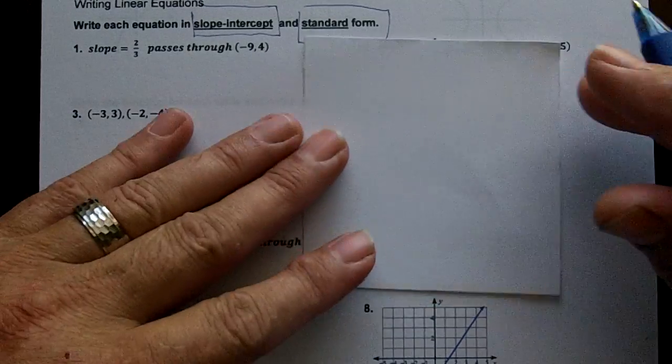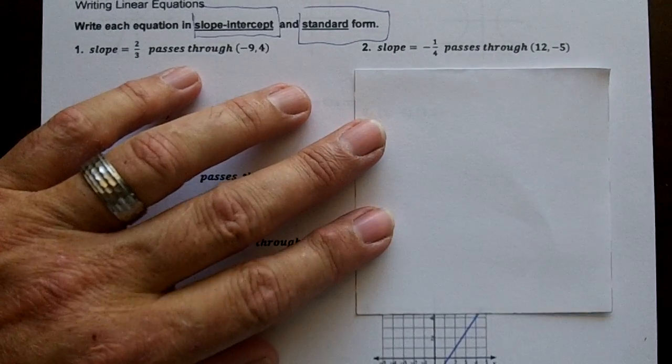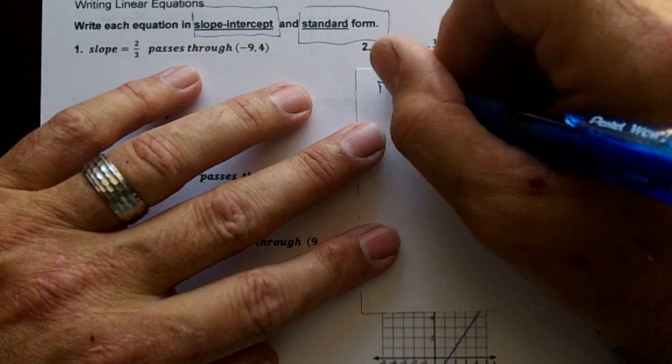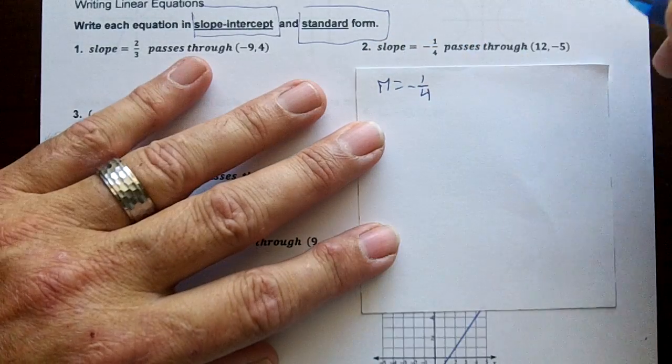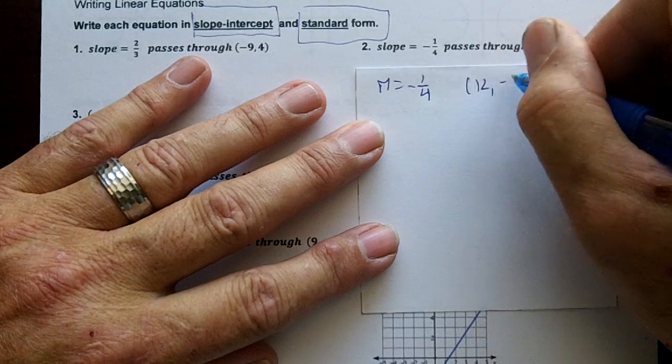Okay, number two. On this one right here, we're just going to do the easy way. So I know my slope is negative 1 over 4, and I know my point is 12 comma negative 5.